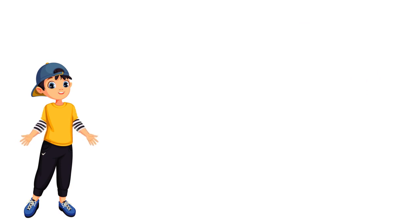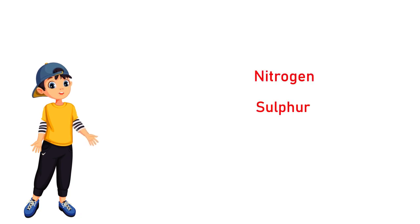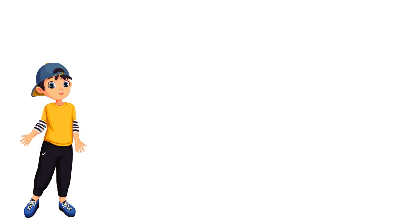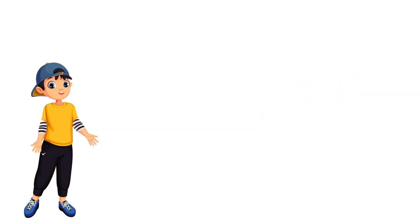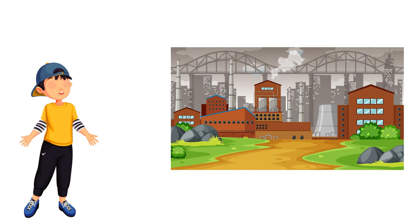The only precaution we can take against acid rain is having a check on the emission of oxides of nitrogen and sulfur. Acid rain is harmful to animals, plants, and monuments. Being responsible citizens, one should be aware of the harmful effects caused by industries which give out nitrogen and sulfur compound waste unethically.